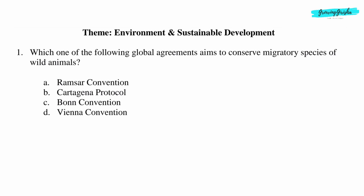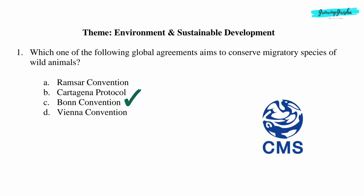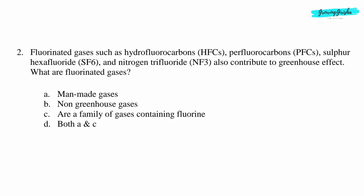Environment and Sustainable Development. Question 1: Which one of the following global agreements aims to conserve migratory species of wild animals? Option C: The Bond Convention, also known as the Convention on the Conservation of Migratory Species of Wild Animals.